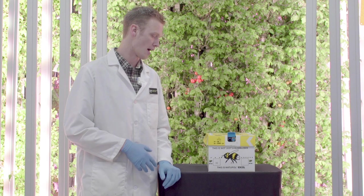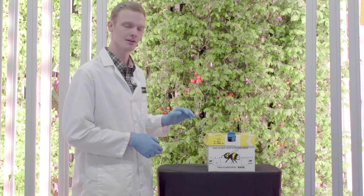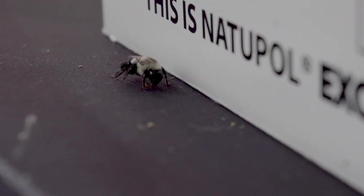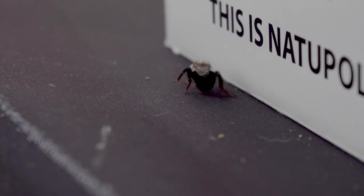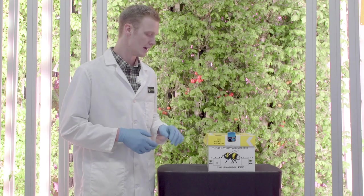The bees we've ordered are actually from Koppert so the hive is called a Natupol Excel. These bees are actually bumble bees. We like bumble bees in the farm because they're very non-aggressive and they're actually very good pollinators. A lot of people talk about honey bees but bumble bees are better suited to an indoor environment. Specifically this is a Bombus impatiens which is the native bumble bee to this area.